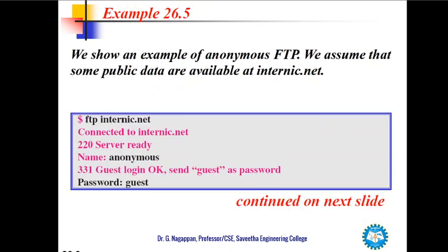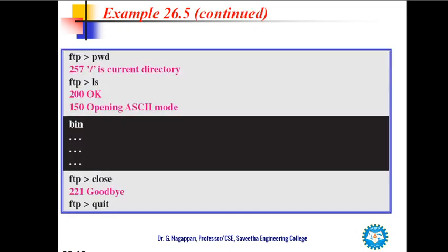Now let us see an example of anonymous FTP. We assume that some public data are available at internic.net. We type 'ftp internic.net' — it connects and gives 220 'server is ready.' When the name is asked, we say 'anonymous,' because it may be a guest requesting public data. The server responds with 331 'guest login OK, send your email as password.'